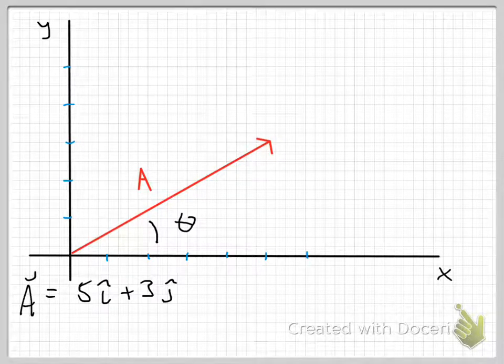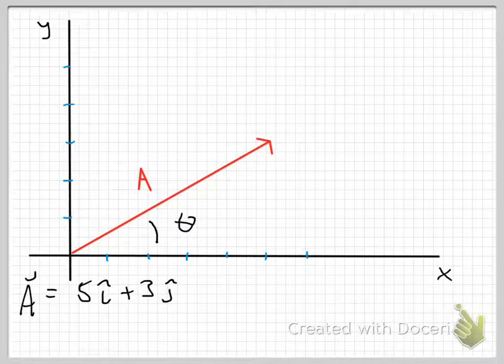In this video we're going to find out if we're given a vector and we don't know the unit vector form of it, how can we find the components of the vector if we know one or more of the angles that it makes with the x or y axis. You can do it either way. I'm going to do it from the x axis here.